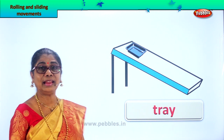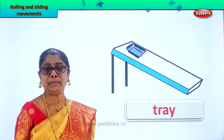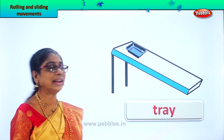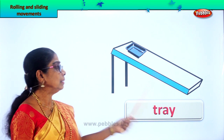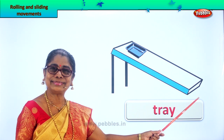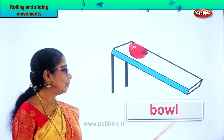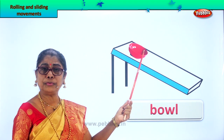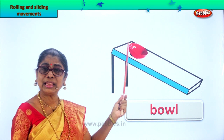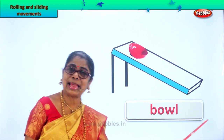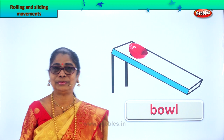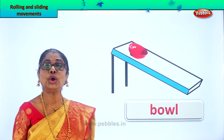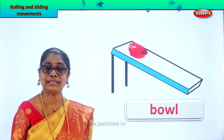Next, a tray — an empty tray, a full tray, anything. You can put things in the tray and it will come sliding down. A bowl — an empty bowl, you can fill it with something. If you keep it on top, it can slide down. So we learned about sliding movements of some items.